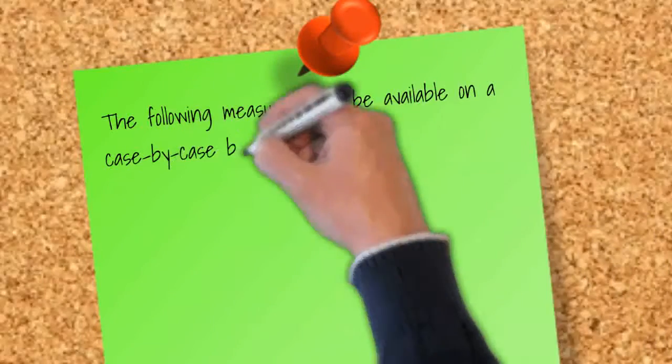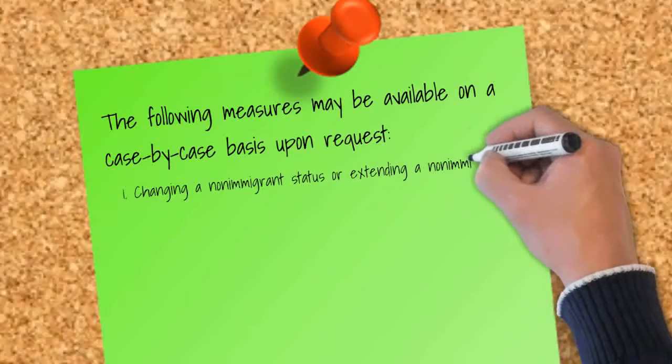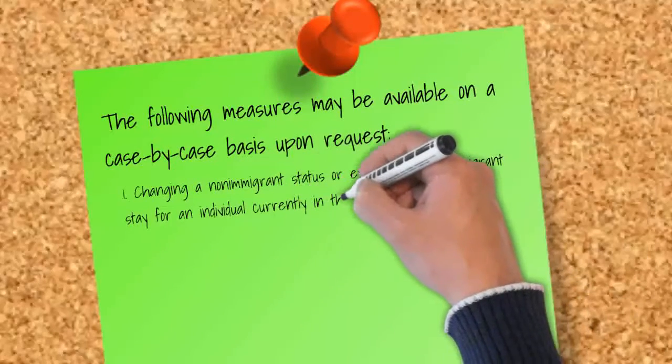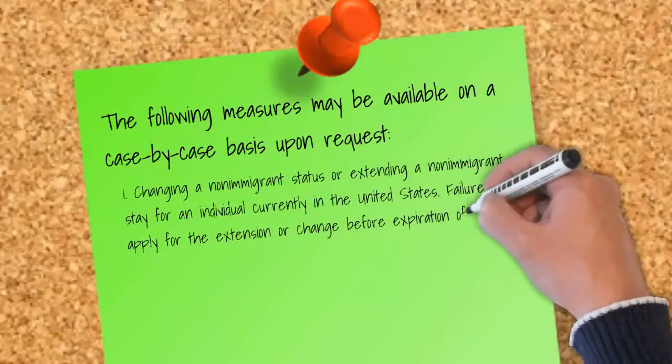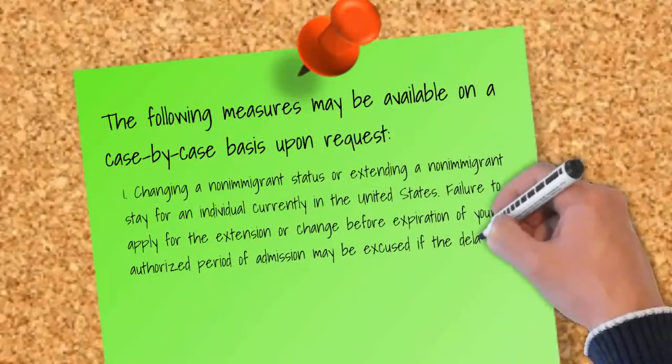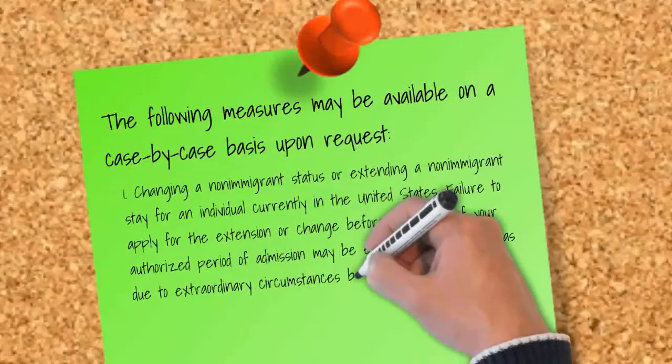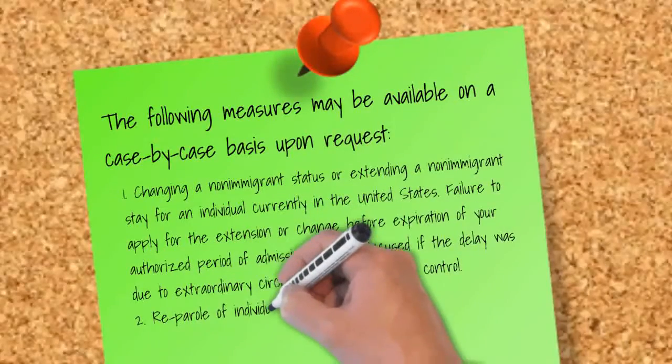First, changing a non-immigrant status or extending a non-immigrant stay for an individual currently in the United States. Failure to apply for the extension or change before expiration of your authorized period of admission may be excused if the delay was due to extraordinary circumstances beyond your control.